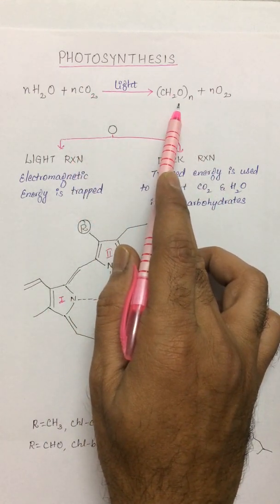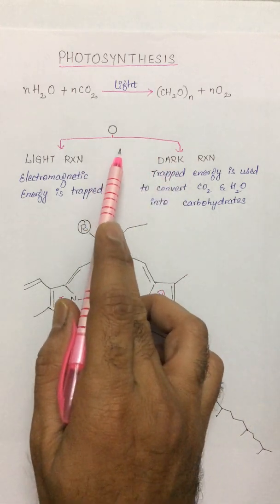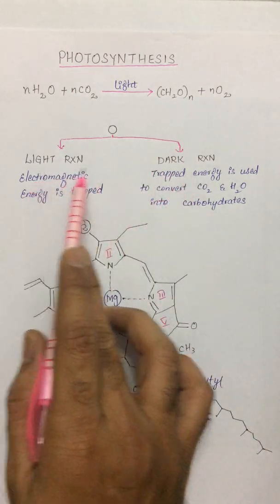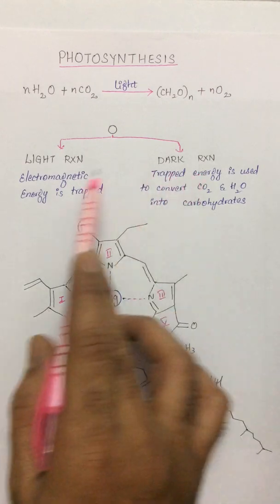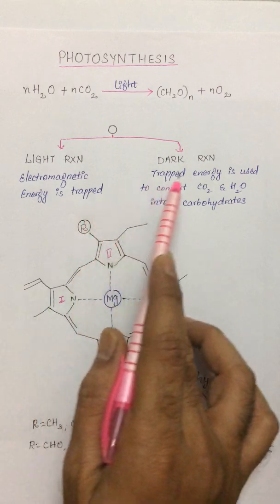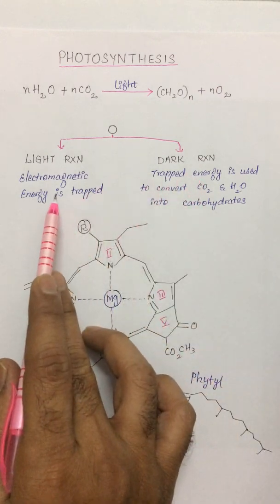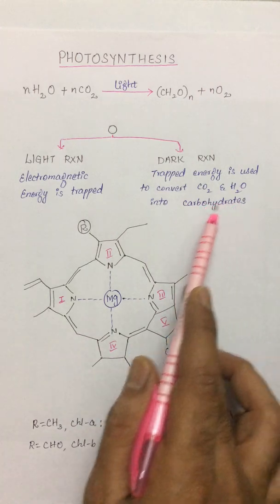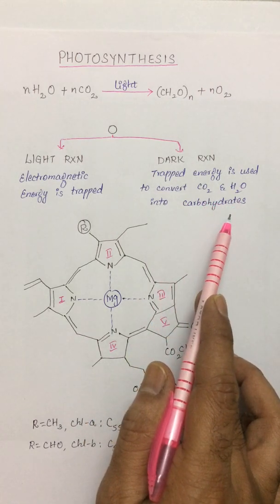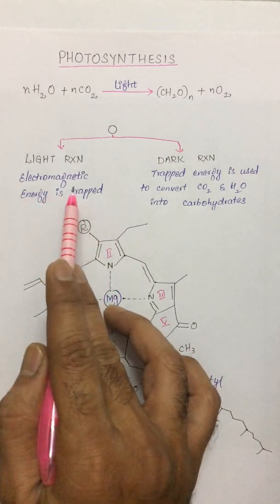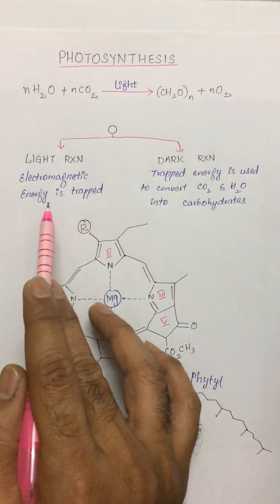Photosynthesis can be discussed under two different headings: a light reaction and a dark reaction. In light reaction, the electromagnetic energy is trapped, whereas in the dark reaction, whatever electromagnetic energy that is trapped is used to convert carbon dioxide and water into carbohydrates.